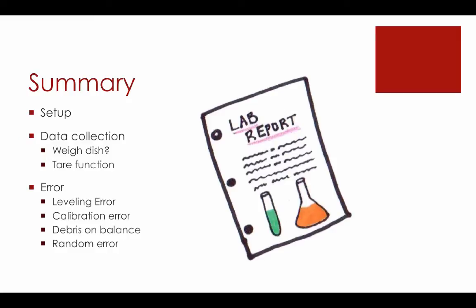To wrap things up, we had a brief discussion on how to properly set up a digital balance. We talked about the process of data collection and specifically when to use and when not to use a weigh dish, and when using a weigh dish, how to properly use the tear function. And finally, we had a discussion on how the balance can introduce error into your experiment. We talked about the error associated with not properly leveling the balance. We talked about the error associated with not necessarily having the balance recently calibrated. We talked about what error that debris on the balance scale can potentially introduce into our experiment. And finally, regardless of how much we work with this, the fact that no matter what we do, we'll always have a certain amount of random error. All of these can be used as potential talking points in your lab reports when trying to analyze how much error in total a balance may have introduced into your experiment.